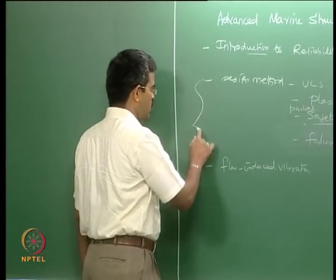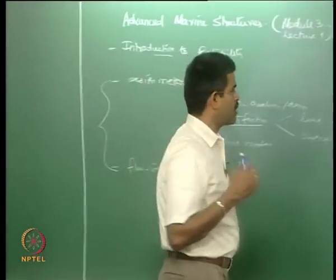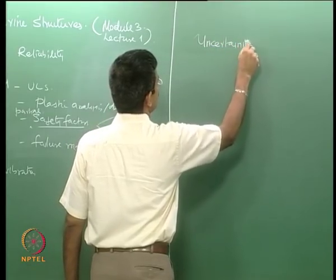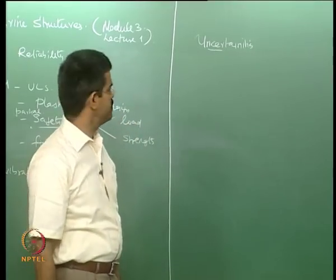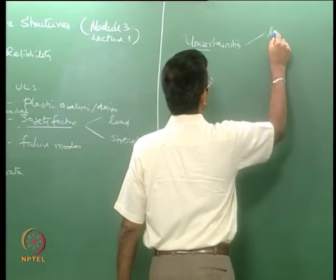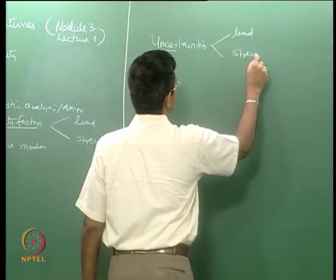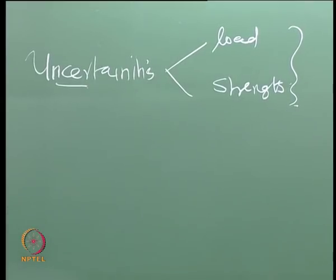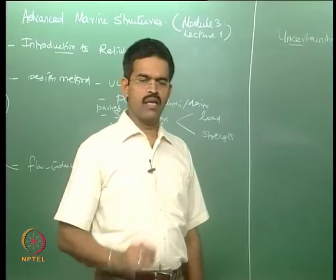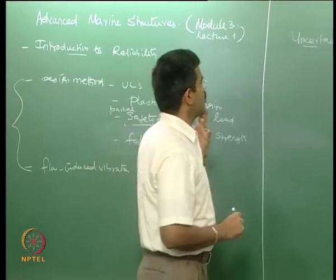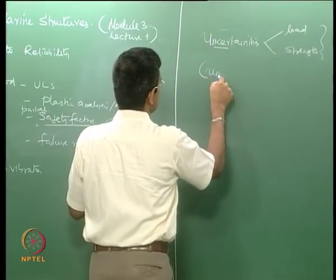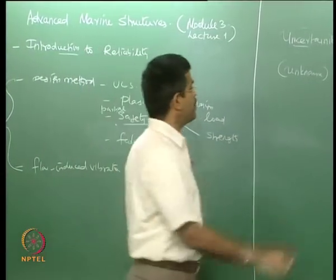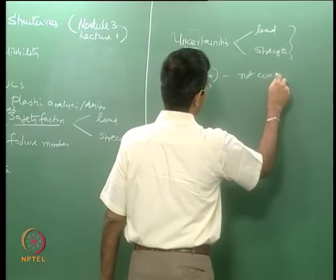Having understood these two modules, the most important question now is: there exist uncertainties in the load as well as in the strength — how are they addressed in design and analysis? The moment I say uncertainty, I can say they are unknowns. They are not very clearly known; they are not completely defined. That is why we call them uncertain.